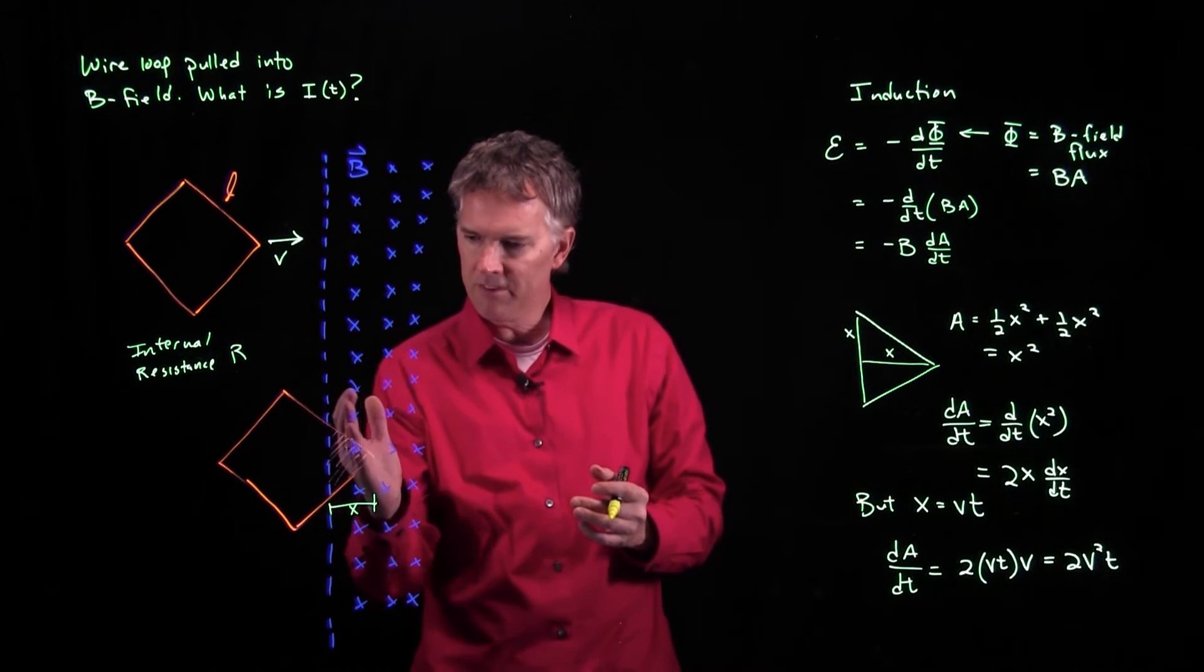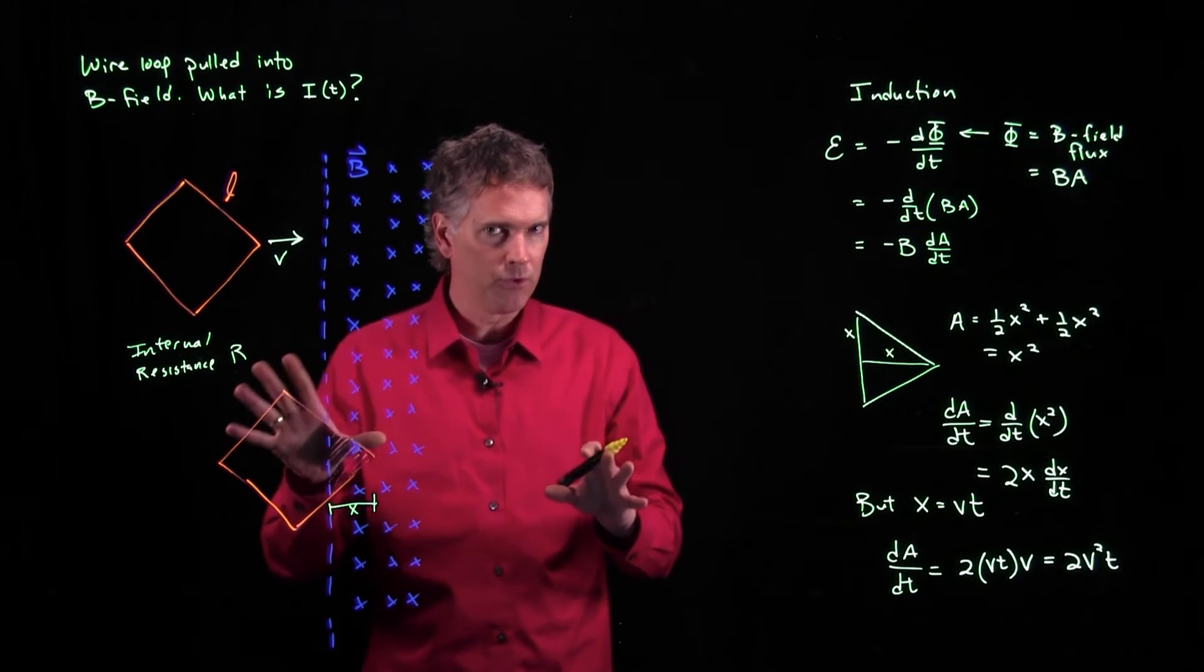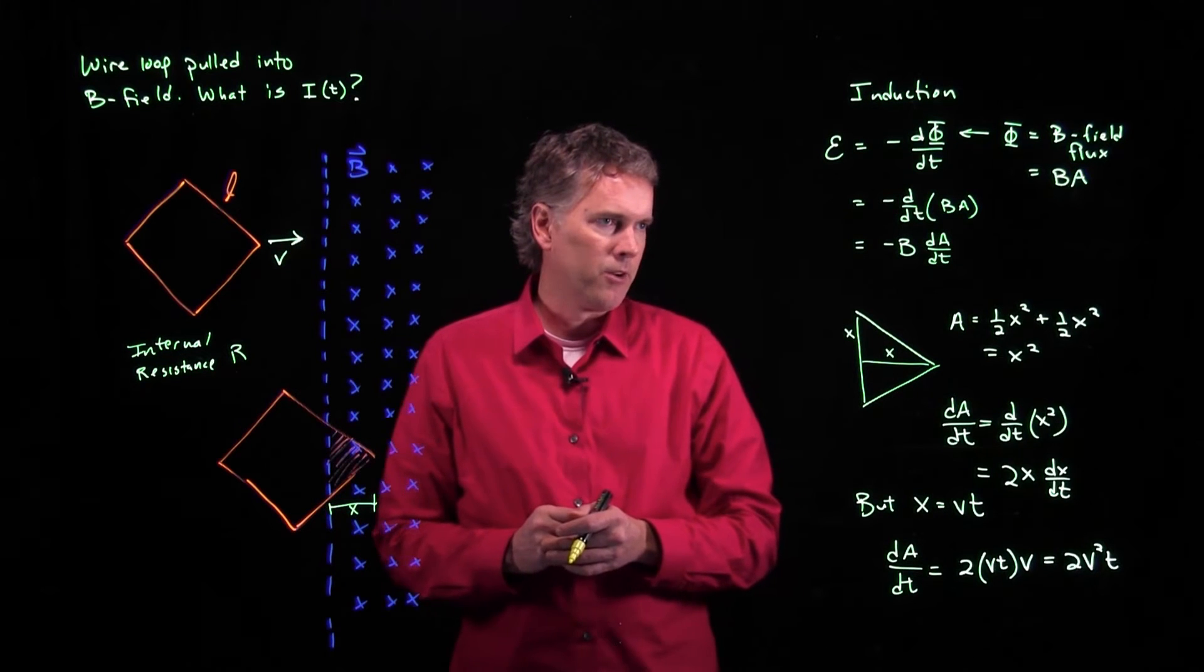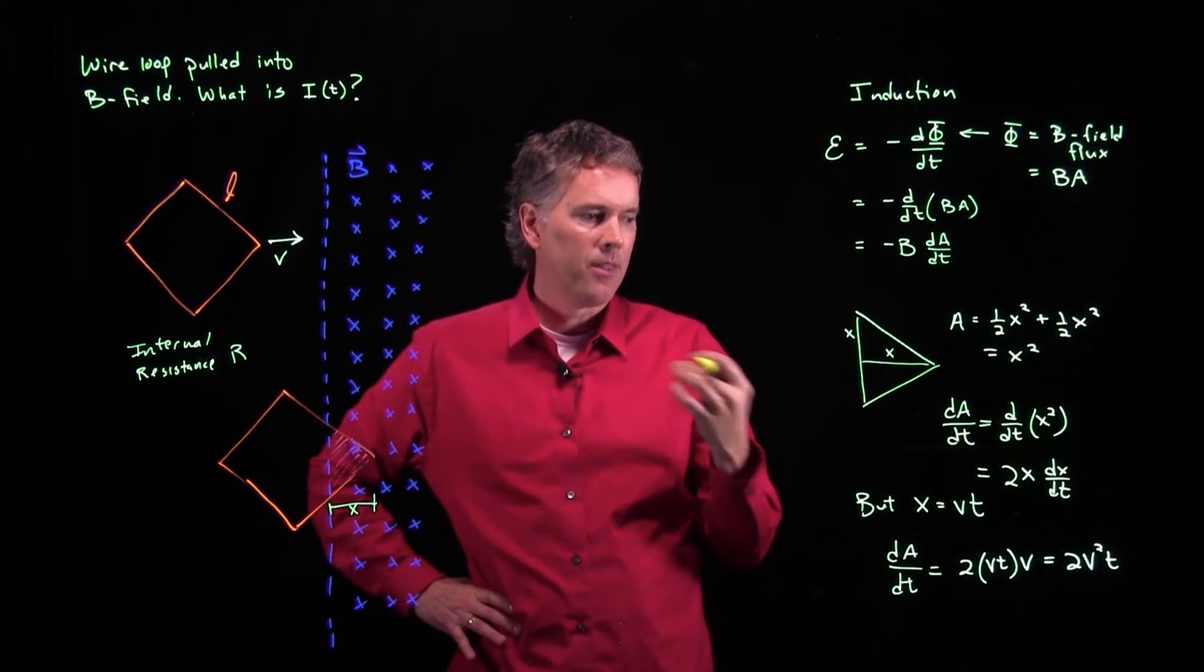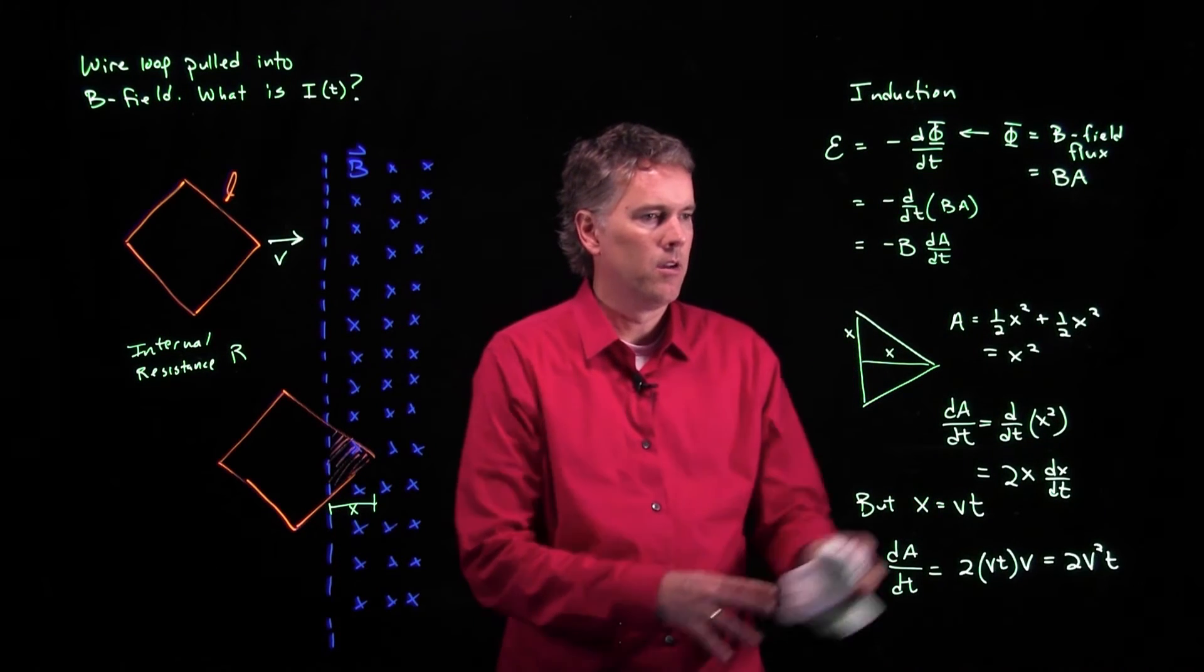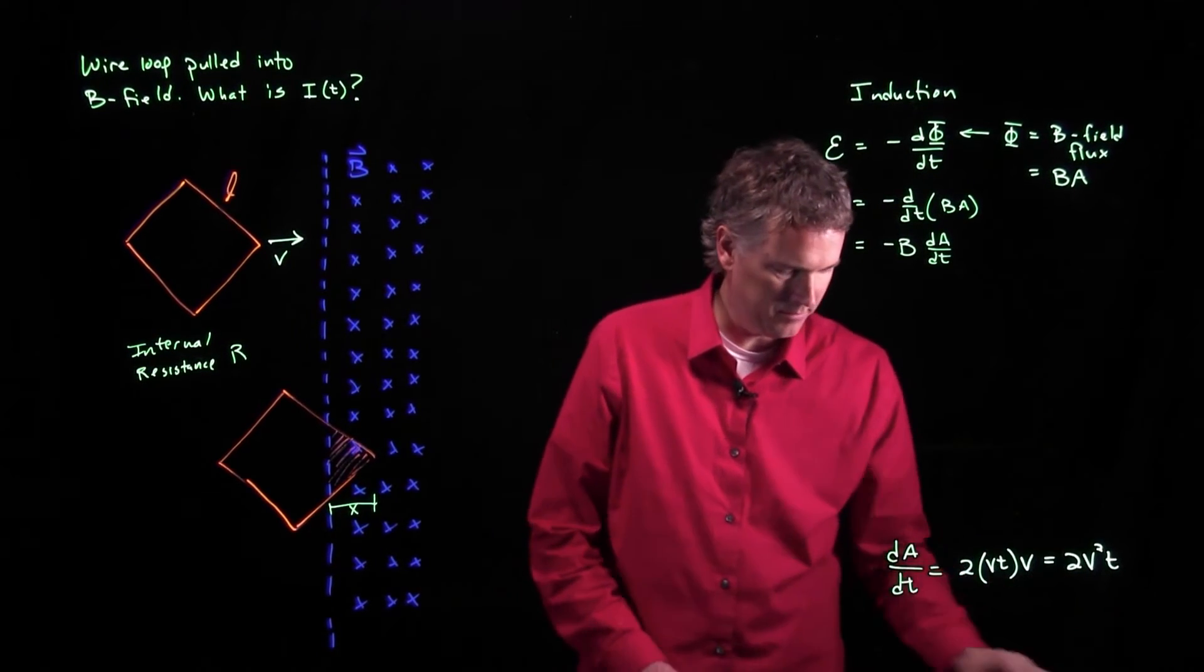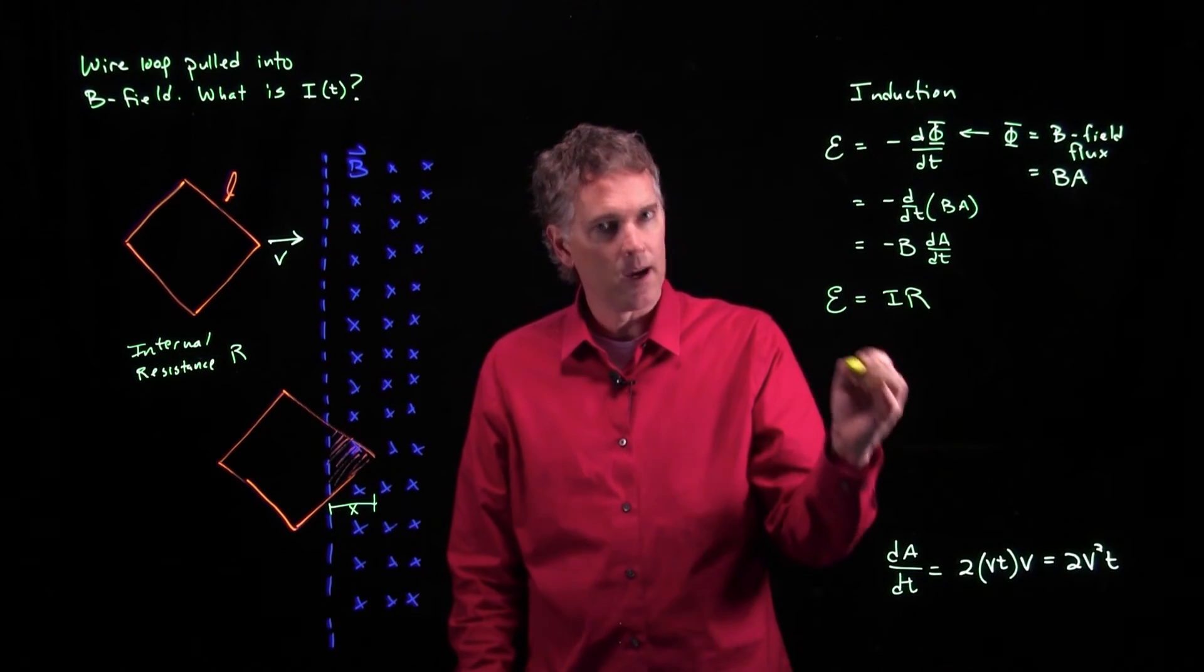Maybe we can put this together with this to figure out something about the current. As the loop starts to come in and the B field flux changes, it's going to generate current in there. Don't worry about which direction the current is. If you're really concerned about that, check out the video on Lenz's Law. But let's see if we can figure out what the amplitude is of that current. Induction, EMF. EMF epsilon, that's just like a voltage. So if we have a voltage and we have a resistance, then we have to have a current. So I'm going to leave that there for a second.